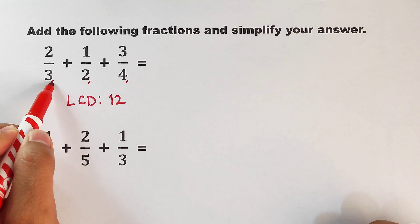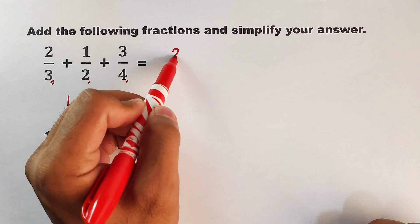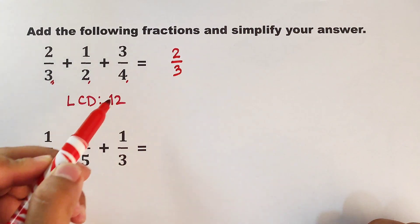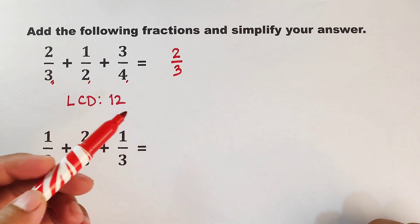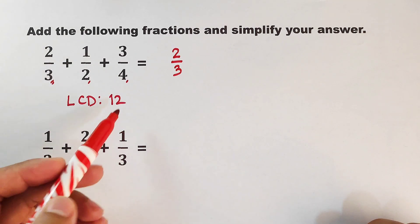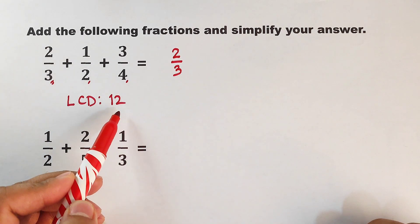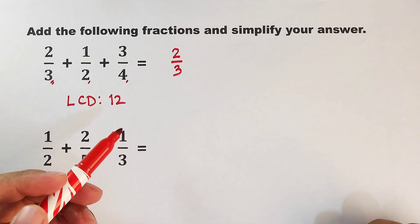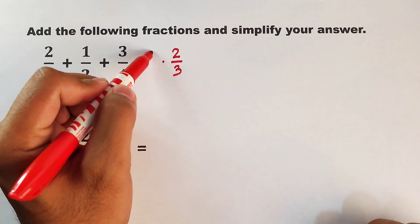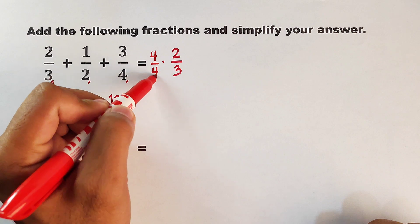For example, we have here a denominator of 3 for the two-thirds. So what is the number that we need to multiply to make this 3 become 12? The answer is 4. So we will multiply the whole fraction by 4 over 4.